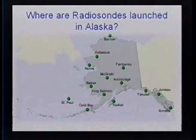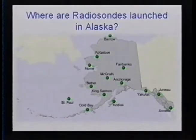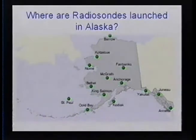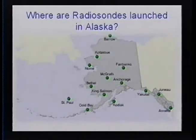Where do we launch these? A variety of places. We launch them in Barrow, Kotzebue, Nome, Fairbanks, McGrath, Bethel, King Salmon, St. Paul, Cold Bay, Kodiak, Anchorage, Yakutat, Juneau, and Annette. It's quite spread out over the state. If you compare this to a plot of where they're launched in the lower 48, you'll find that the places are quite a bit closer to each other than they are in Alaska.